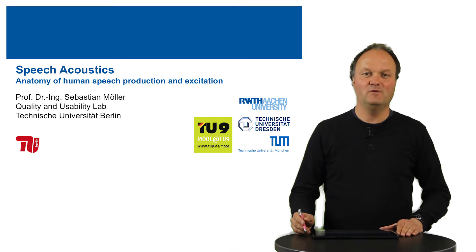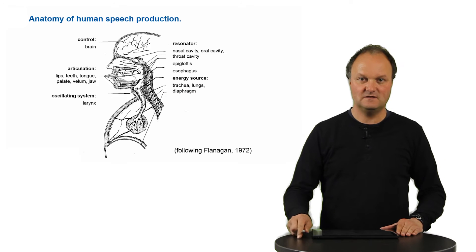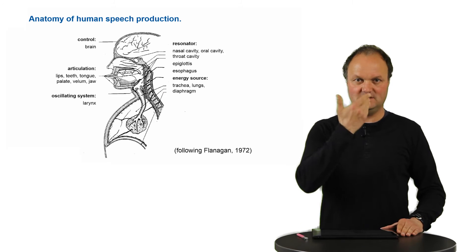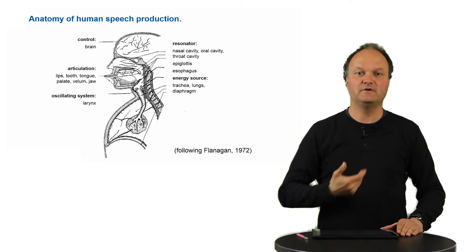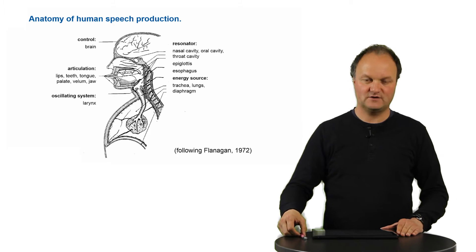In order to do so, we first have to talk about the anatomy of the human speech production system. What you see in the background is actually a cross-section of the upper human body including all the organs which are responsible for the production of speech.